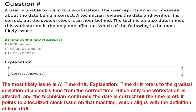Time drift refers to the gradual deviation of a clock's time from the correct time. Since only one workstation is affected and the technician confirmed the date is correct but the time is off, it points to a localized clock issue on that machine, which aligns with the definition of time drift. That's why the correct answer is A, time drift.